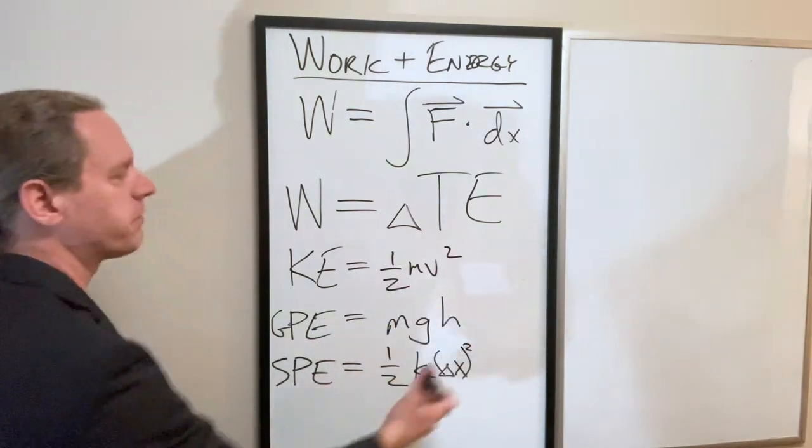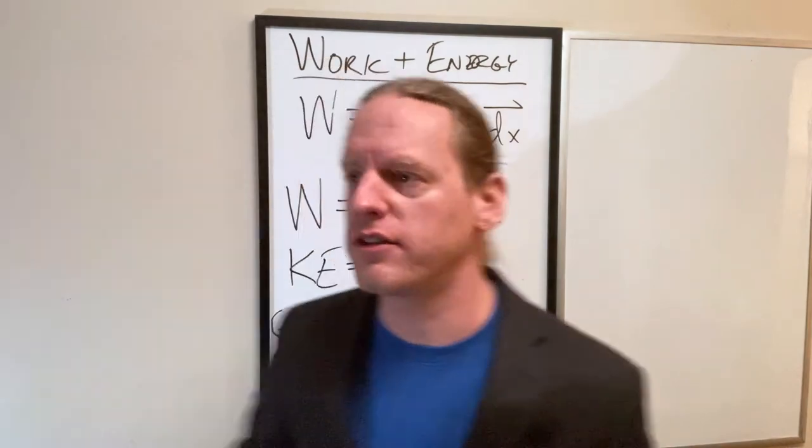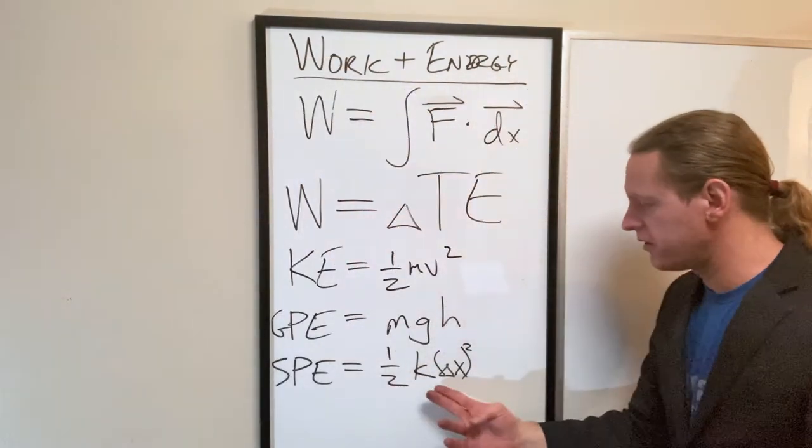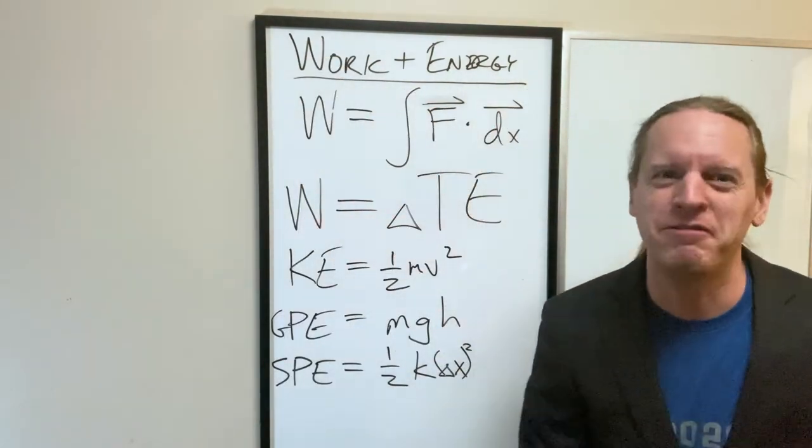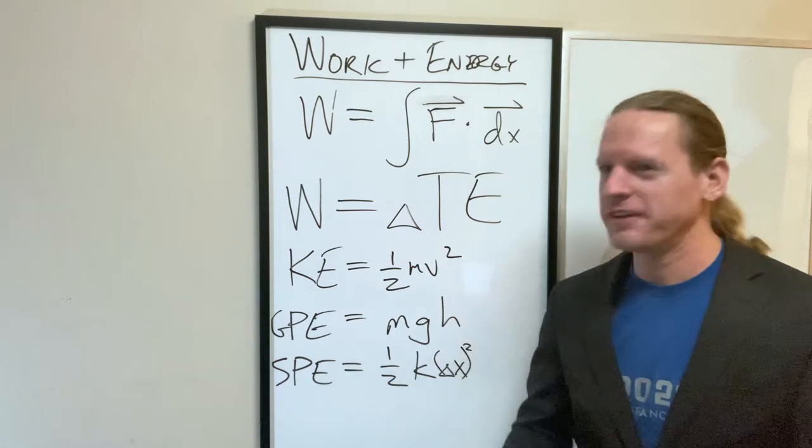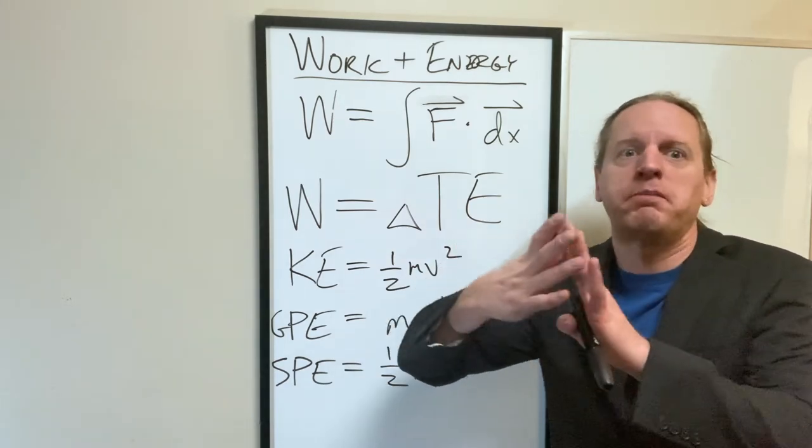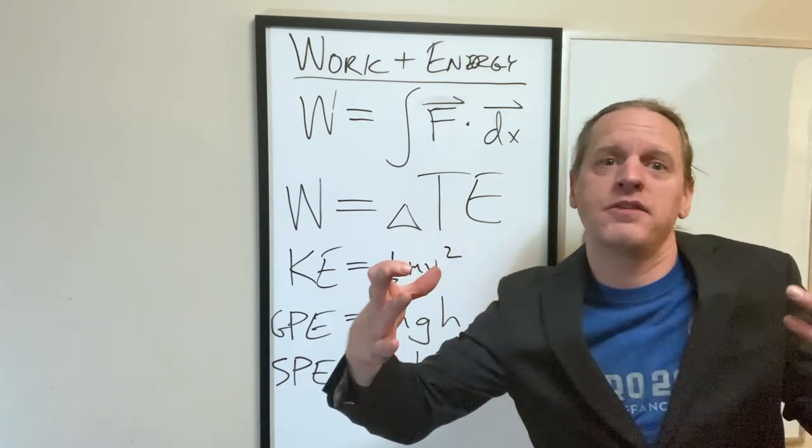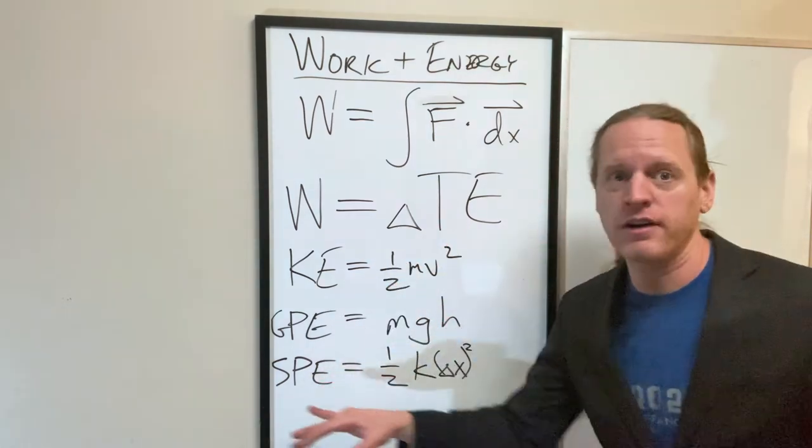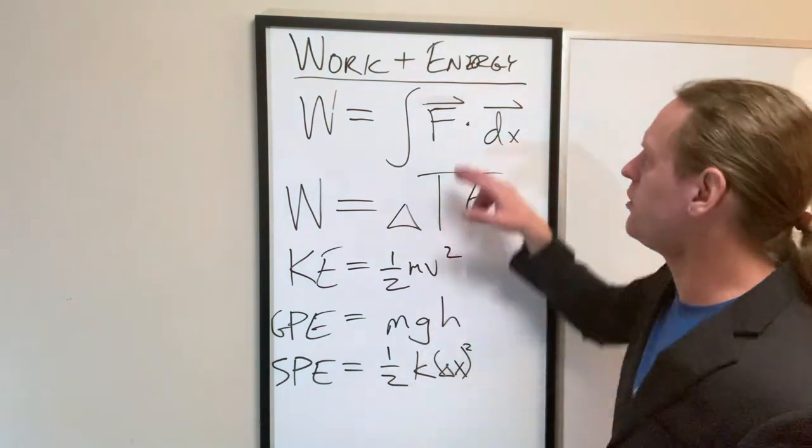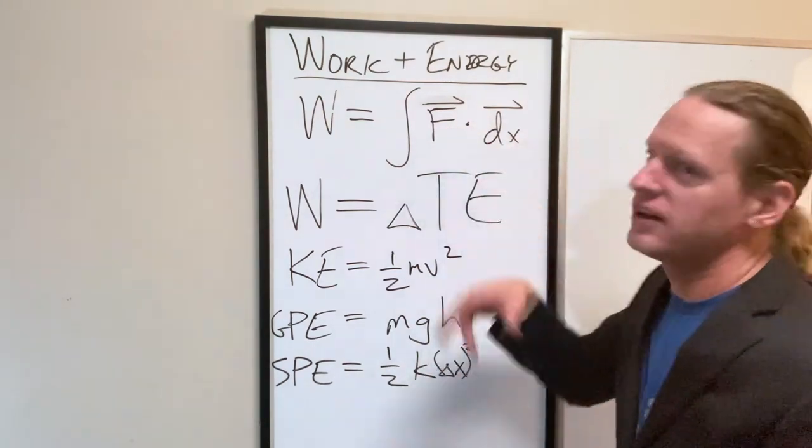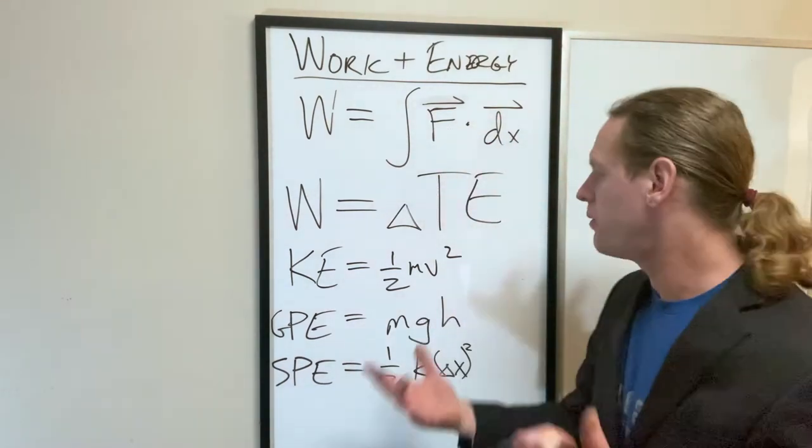Again, you guys all know this to be true from just like memorizing these equations. This equation here specifically is fun to derive from Hooke's law. The fact that as you stretch a spring, it resists stretching proportional to the distance that it's already been stretched. So anyway, if you integrate Hooke's law, you get the spring energy. So you put Hooke's law kx dx, one half kx squared. So pretty useful.